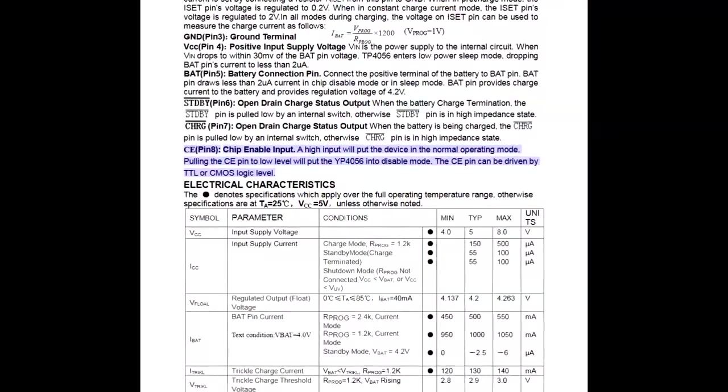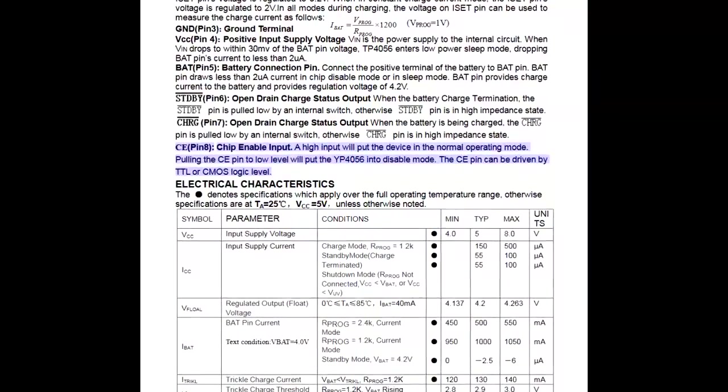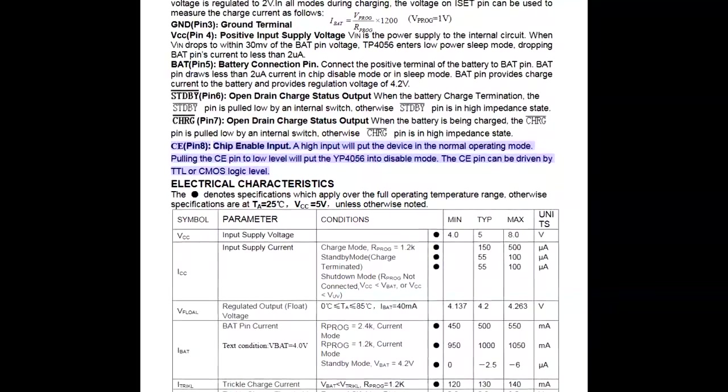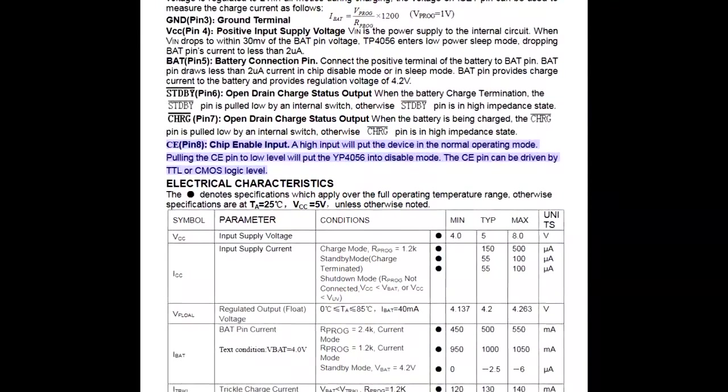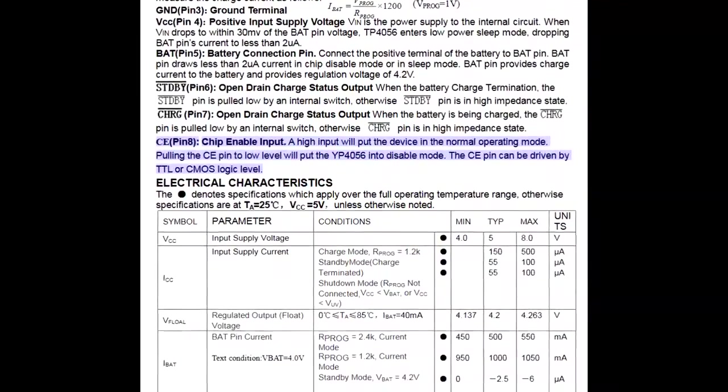The TP4056 has a pin called CE Input, which stands for Chip Enabled Input. This pin acts as a switch controlling the charger. Pulling this pin to high will enable the charger. Pulling it to low will disable the charger.